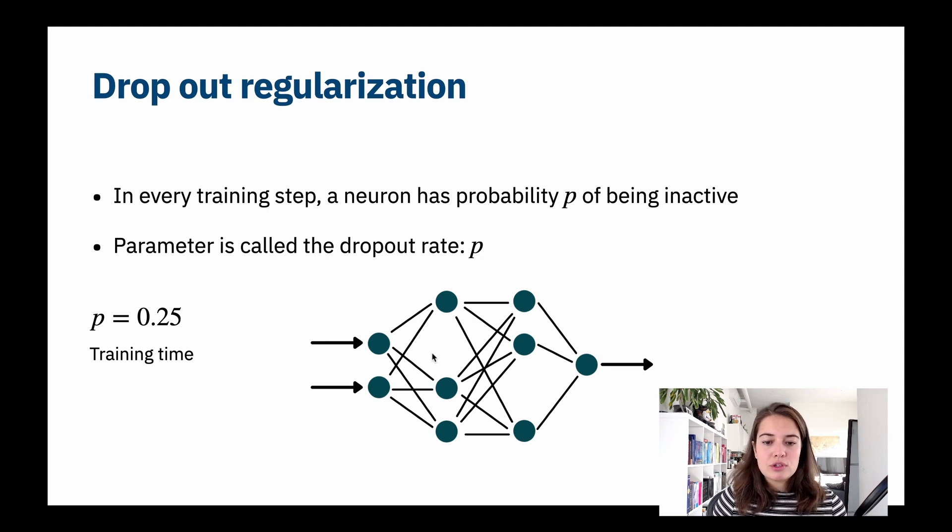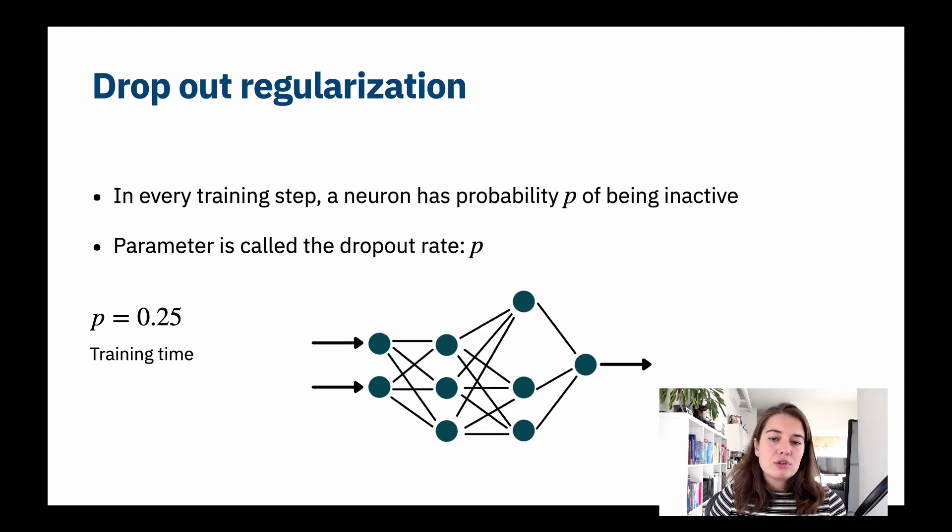Of course, then you're going to get some of the neurons being inactive. In the first hidden layer we have one guy missing here, we have another guy missing here. Of course, this is going to change which one is inactive and which one is active.